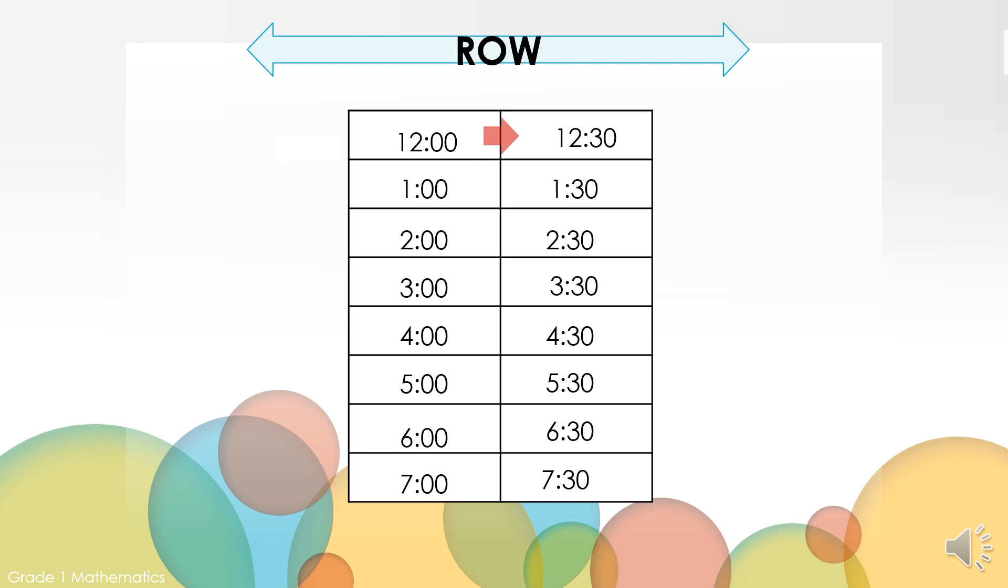What do you notice about the time as we go across the row? Remember, rows go from left to right. See the big blue arrow up top? As we count by half hours, the hour stays the same, but the minutes add up by 30.